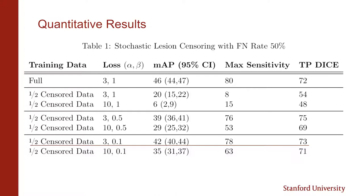Quantitatively, we see that the best detection and segmentation metrics are when we train the data without missing lesion annotations. This makes sense. However, we can see that when training with our lopsided bootstrap loss — which is when we set our beta hyperparameter to less than 1 — we can revive a lot of our performance with respect to training straight off of the noisy annotations.